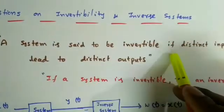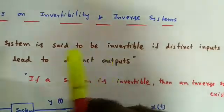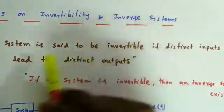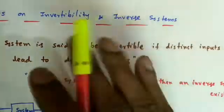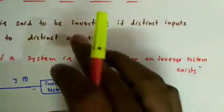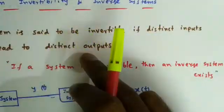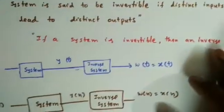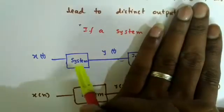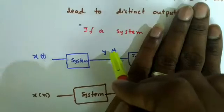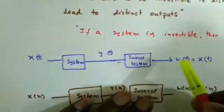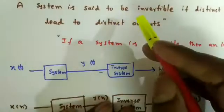A system is said to be invertible if distinct inputs lead to distinct outputs — that means for different inputs I should get different outputs. If two different inputs are giving the same output, then the system is not invertible. Once the system is invertible, it will have an inverse system. This is shown as: I give x(t), I get y(t), and the system is invertible if different inputs yield different outputs.